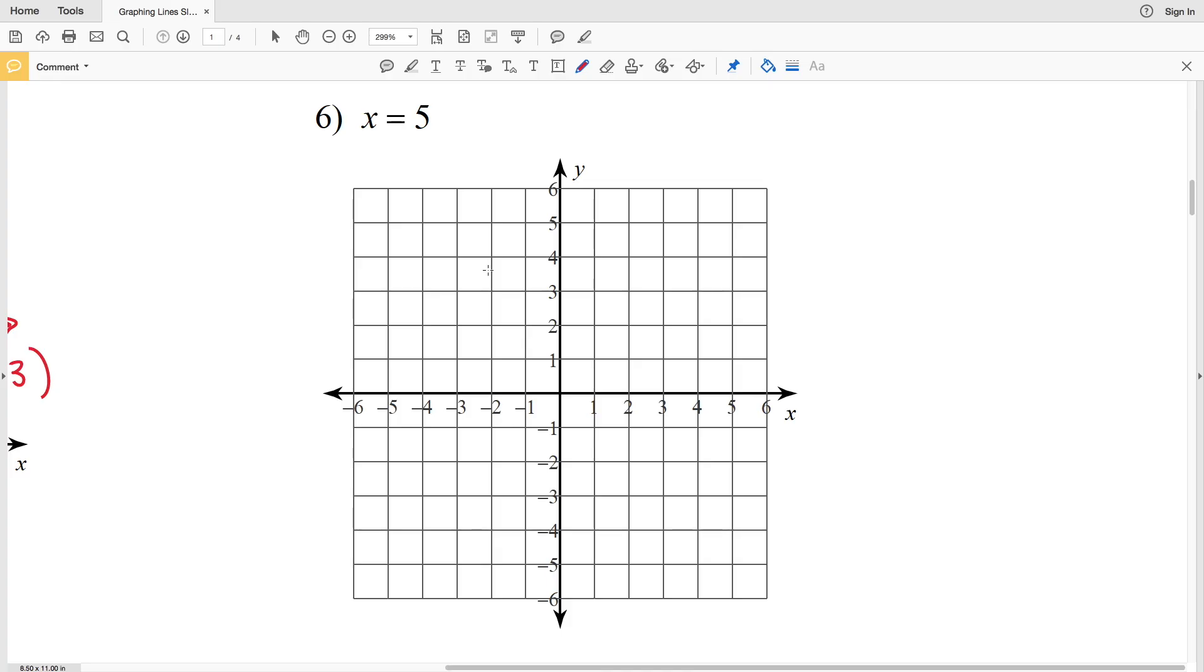For number six, we have x is equal to a positive 5. So that means for any value that we plug in for y, x is always going to be 5. So if y was 1, x would be 5. If y was 0, 5, and so on. So number six doesn't have a y-intercept since it's just a vertical line following that x equals 5.